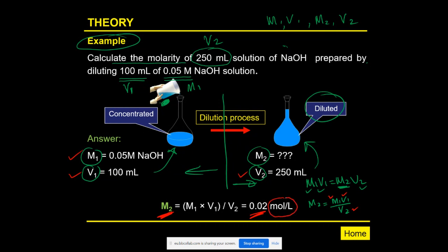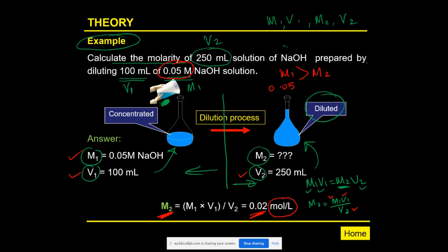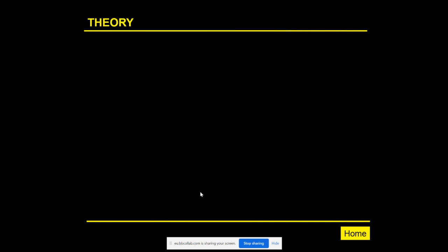The unit of M2 is still mol per liter. As expected, M2 = 0.02 M, which is less than M1 = 0.05 M, confirming the solution has been made lighter. That completes the dilution calculation.